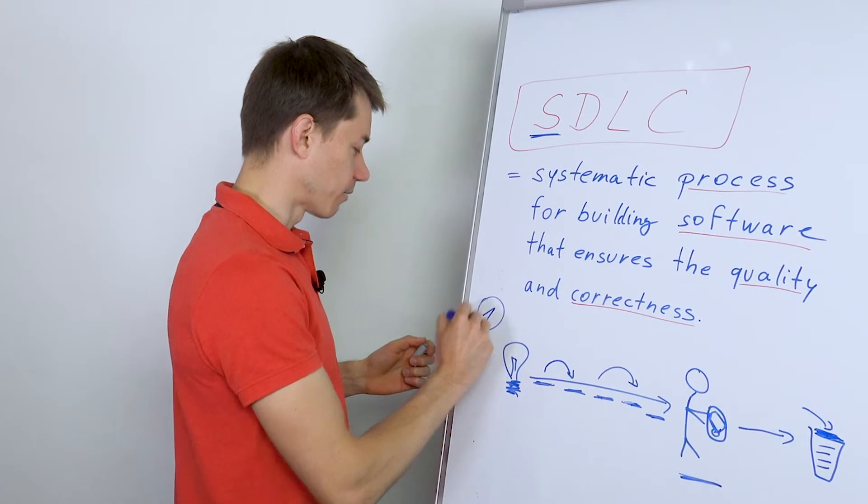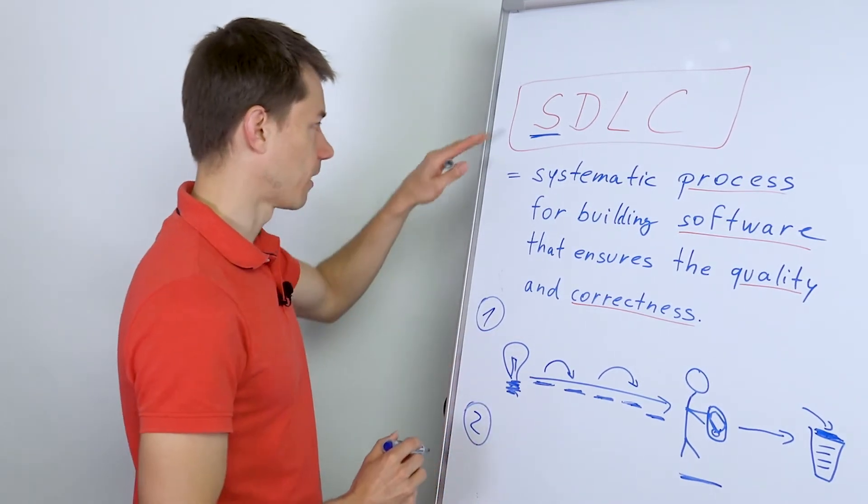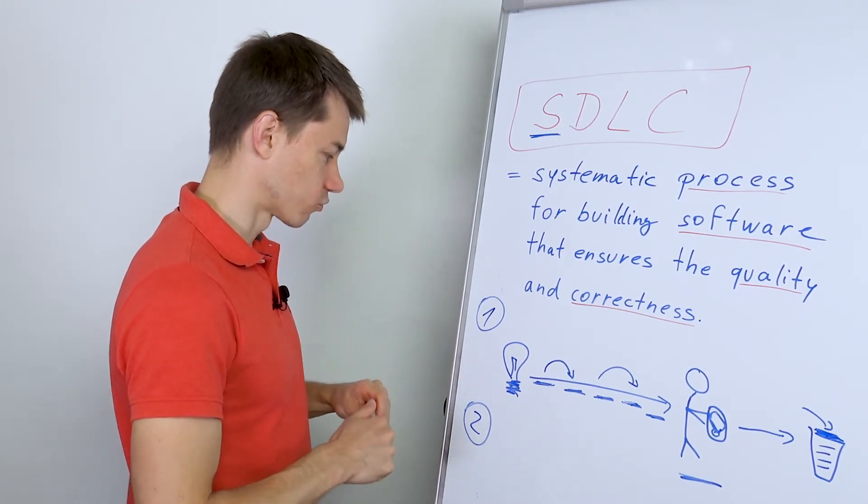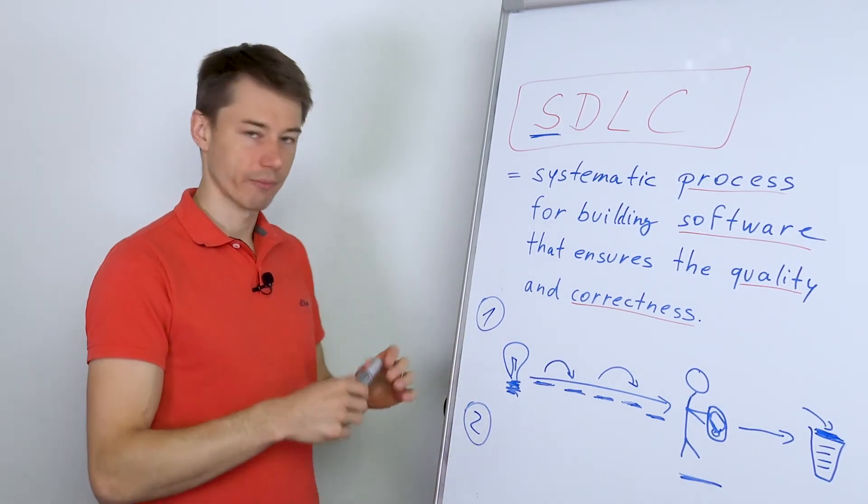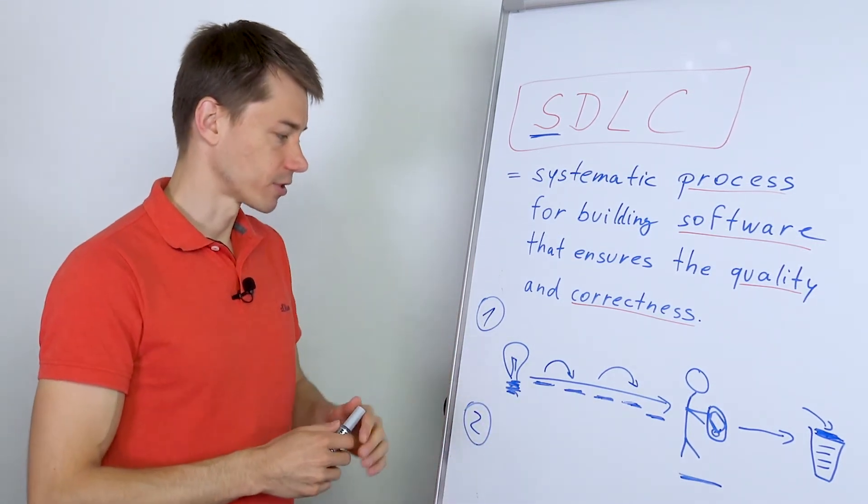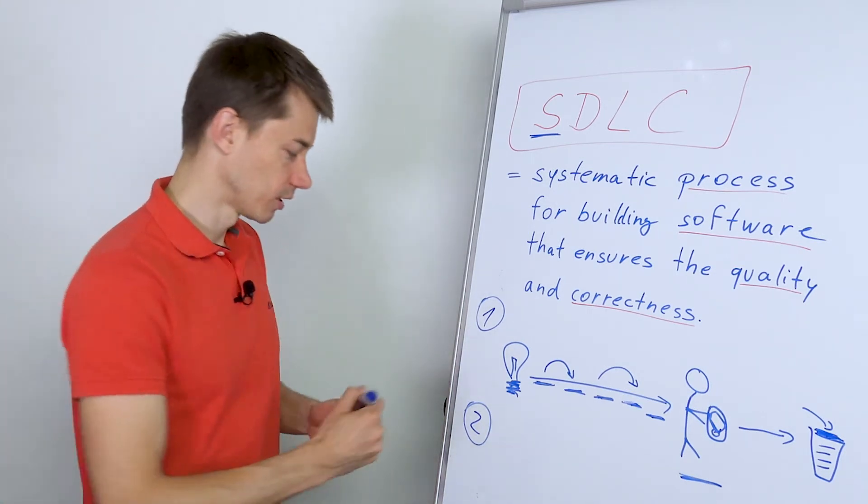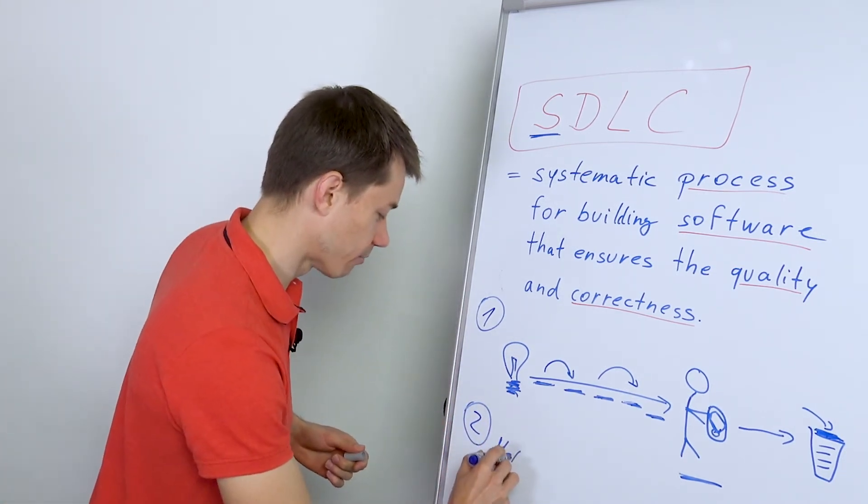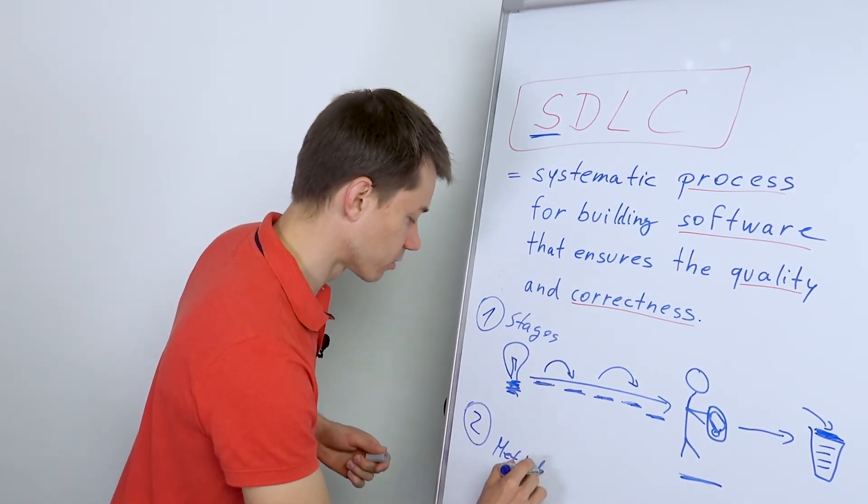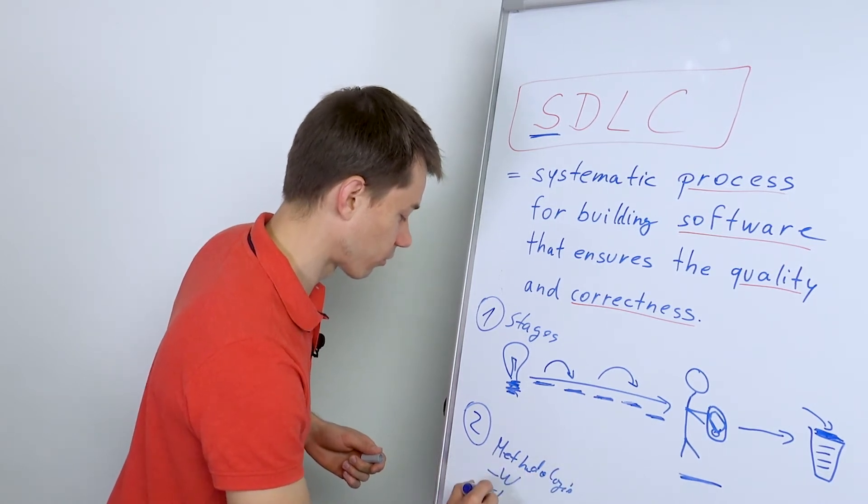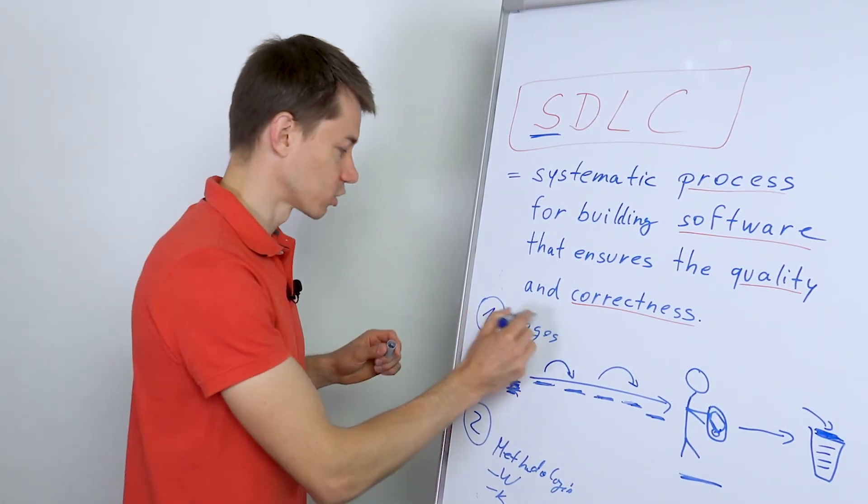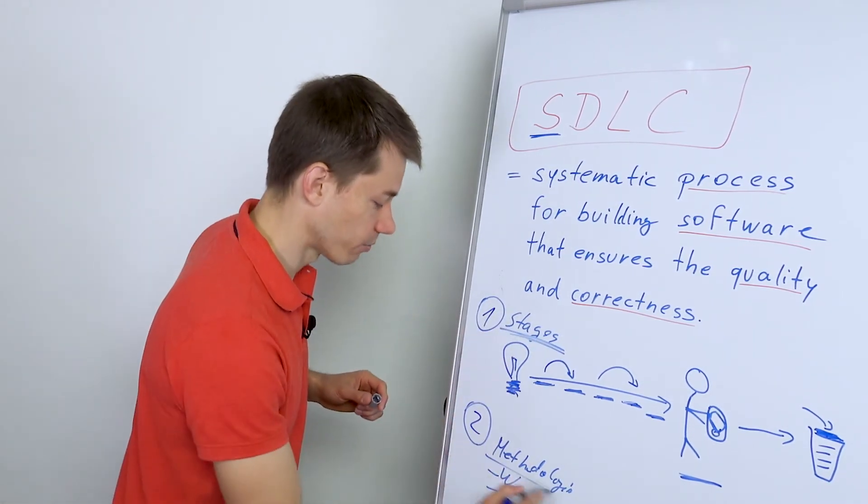So first it describes the stages, and then the software development lifecycle also relates to the methodologies because you can have different methodologies - for example, waterfall or Kanban that we will talk about. So these are the stages and these are the methodologies, such as waterfall or Kanban, that we will also talk about in this course. What stages are there and what methodologies are there?